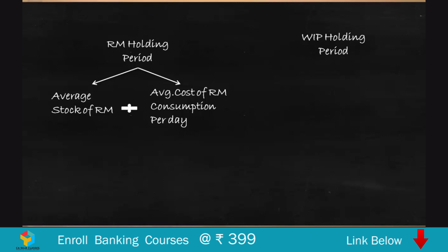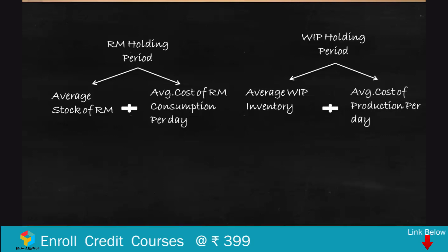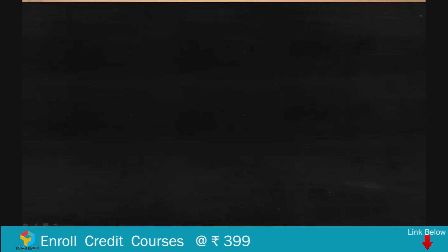Next is the work in process holding period. This is computed as average work in process inventory divided by average cost of production per day. To find average cost of production per day, take total production cost per annum and divide by number of days in a year. Average work in process divided by average cost of production per day gives you the work in process holding period.